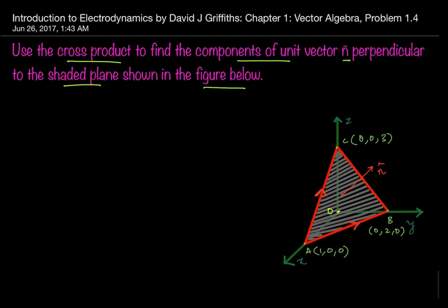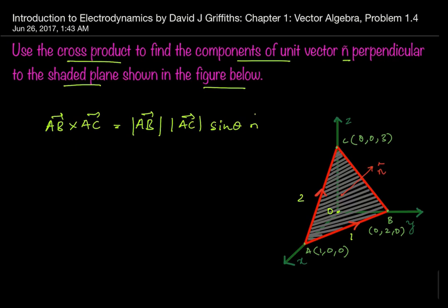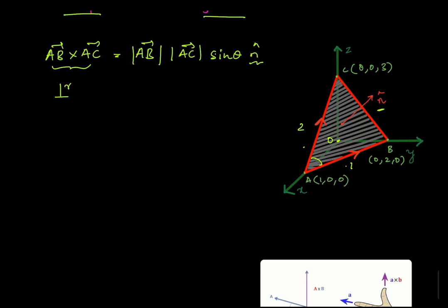We have to find two vectors whose cross product lies perpendicular to the shaded plane. If we start with AB and AC, we know that AB cross AC will have a direction given by n-hat, where n-hat is the unit vector perpendicular to the plane containing AB and AC. So if AB and AC both lie on the shaded plane, then finding AB cross AC would solve our problem, and finding a unit vector from there should be straightforward.